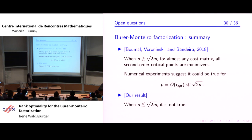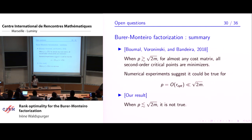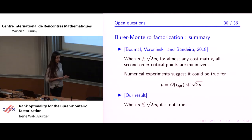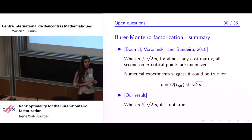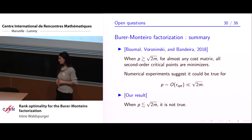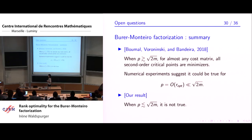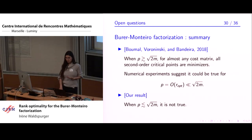To summarize: when P is larger than sqrt(2m), Boumal, Voroninski, and Bandeira showed that for almost any cost matrix, the factorized problem has no second-order critical points that are not minimizers, so it can be solved efficiently. Numerical experiments suggested this might also hold for P of the order of the optimal rank — smaller than sqrt(2m). What we proved with Adrien Roulet is that when P is smaller than sqrt(2m), this is not true: to guarantee that Riemannian algorithms work, we need additional assumptions on C.